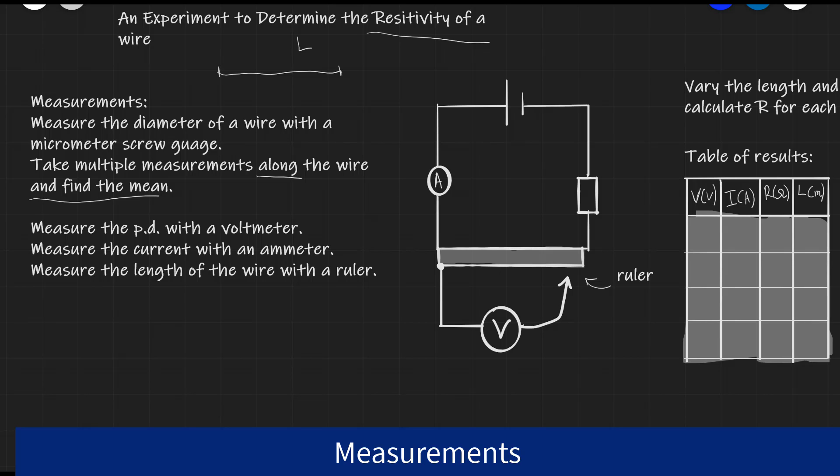Please note that we'll also be taking measurements of the potential difference across the wire with a voltmeter. So this will be the points here and here, we're going to be able to vary this point. Then we can also measure the current with an ammeter and the length of the wire L with a ruler, which is actually just attached to the wire, like so.